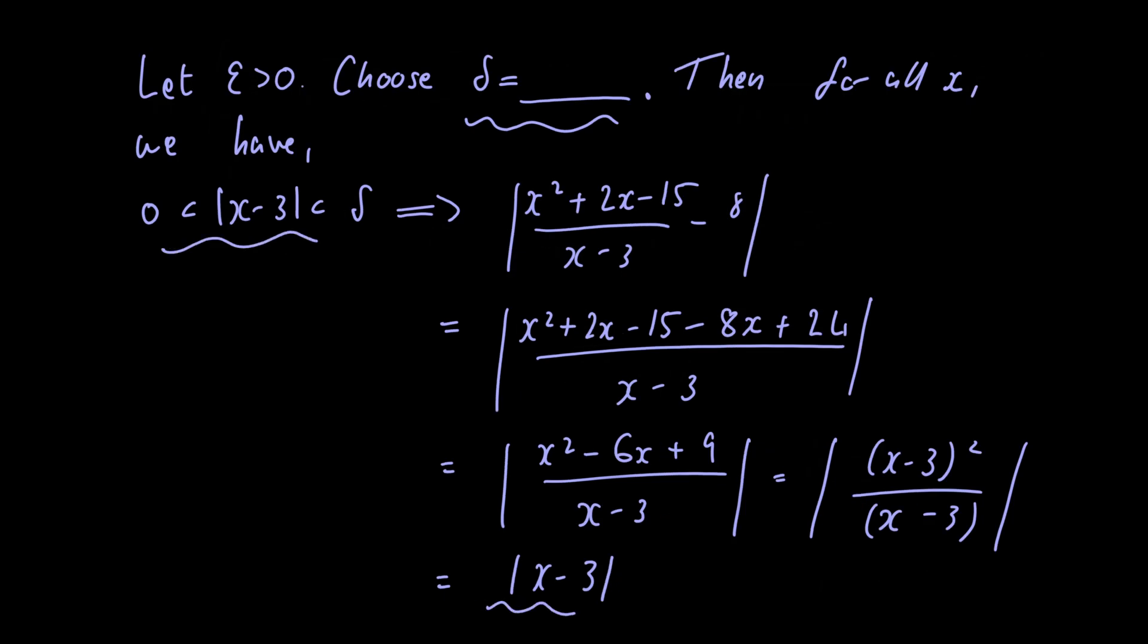A sensible choice would be to choose delta equal to epsilon. Then this condition here implies that the absolute value of f of x minus l which simplifies to the absolute value of x minus 3 is less than epsilon. And that completes the proof.